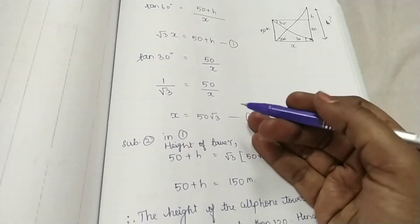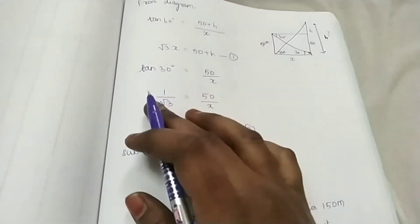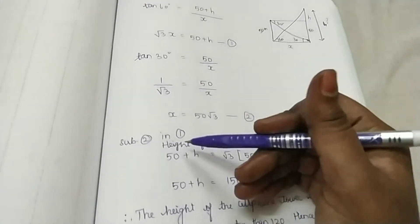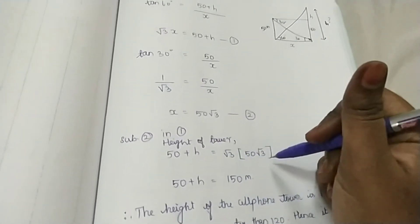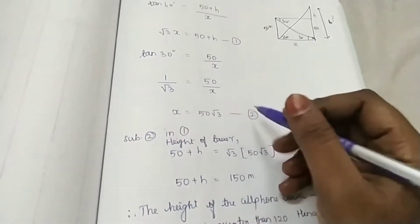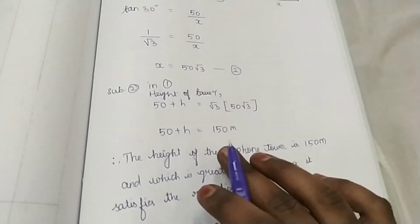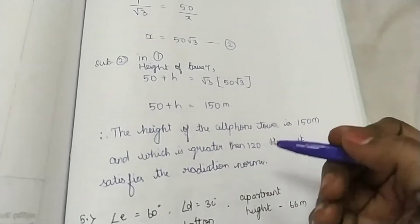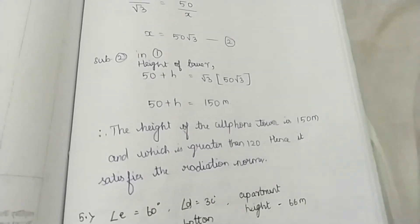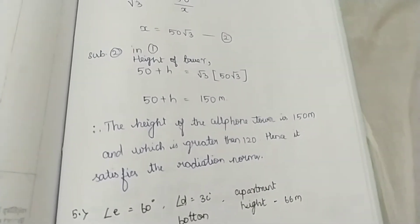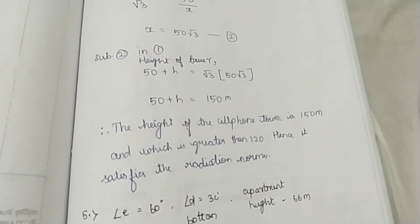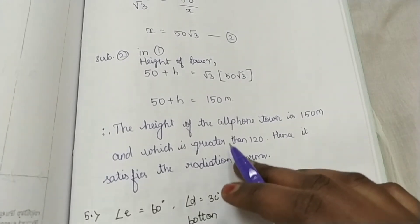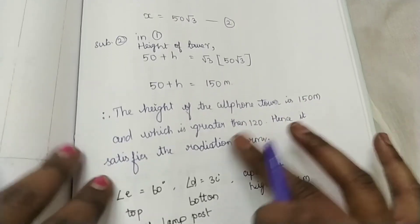It is very simple. Tan 30 gives the same equation, and the x value is the same — substitute for h. The height of the tower is 50 plus h, so you use h and x accordingly. Working through the equation, we get 150 meters. This tower is greater than 120 meters, so the tower is 150 meters — that is 120 or greater, so we proceed onwards.